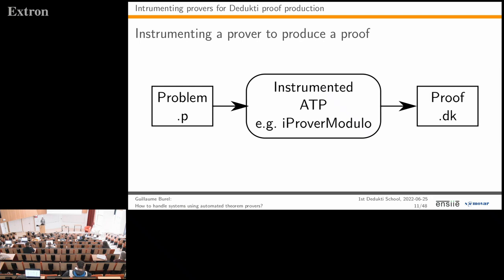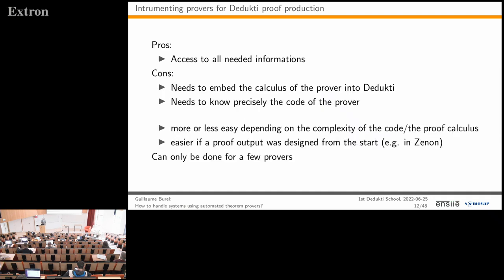The first idea is to instrument the prover to make it able to produce a Dedukti proof. You change the prover's code so that after finding a proof, it outputs a Dedukti proof. The advantage is that you have access to all the information needed: which inference rule was used, on which formula, at which position, etc.